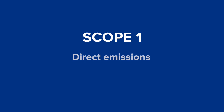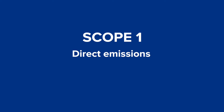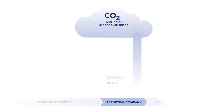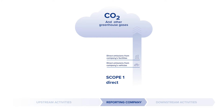Let's begin with Scope 1. It includes direct emissions from a company's owned or controlled sources, such as on-site energy like natural gas and fuels, refrigerants, furnaces, as well as emissions from fleet vehicles. Also included in Scope 1 are process emissions, which are released during on-site manufacturing.